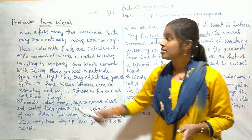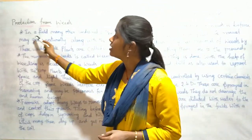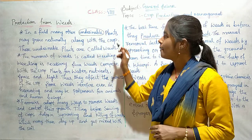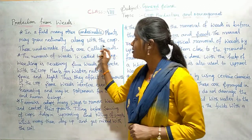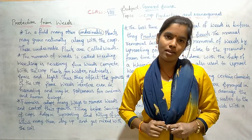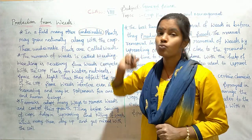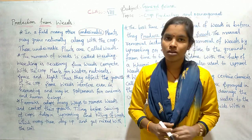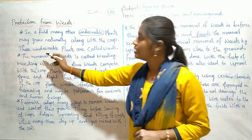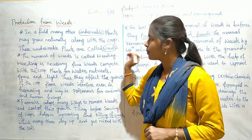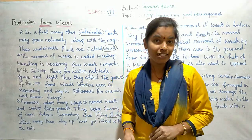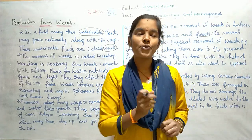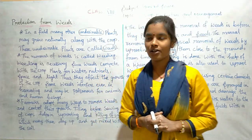Now I will start today's class: protection from weeds. In a field, many other undesirable — meaning unwanted — plants may grow naturally along with the crop. These undesirable plants are called weeds. So what are weeds? Unwanted plants which grow along with the crops are called weeds.